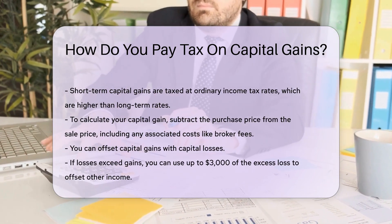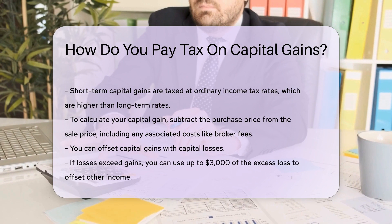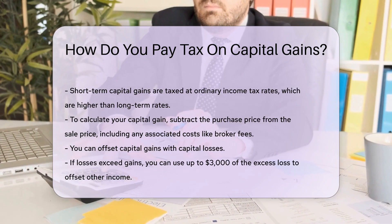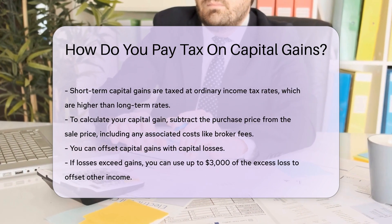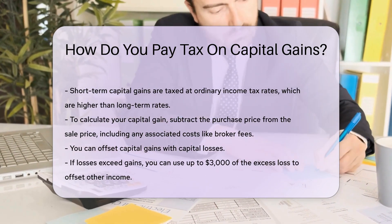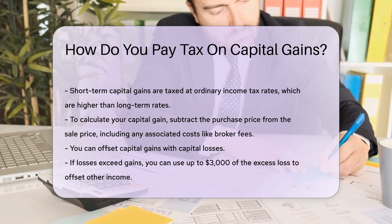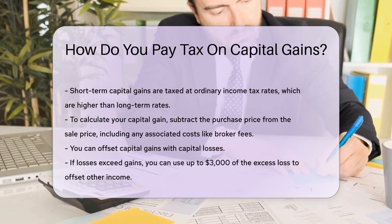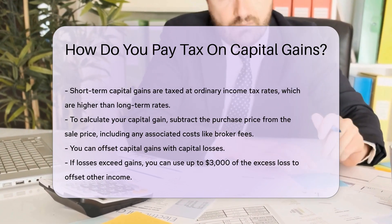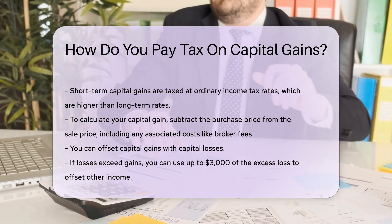You can offset capital gains with capital losses. If your losses exceed your gains, you can use the excess loss to offset up to $3,000 of other income. Any remaining loss can be carried forward to future years.